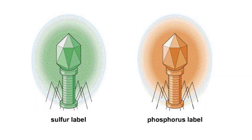They grew viruses with either radioactive sulfur, which labels the viral protein, or radioactive phosphorus, which labels DNA.